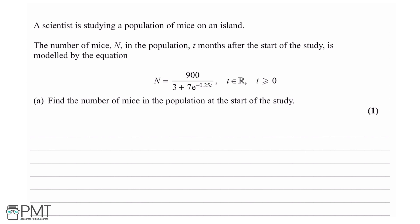I am going to highlight some key parts. The number of mice is n, and t months is the time after the start of the study. We need to find the number of mice at the start of the study. When you are told 'at the start' of something, this always means t equals 0.